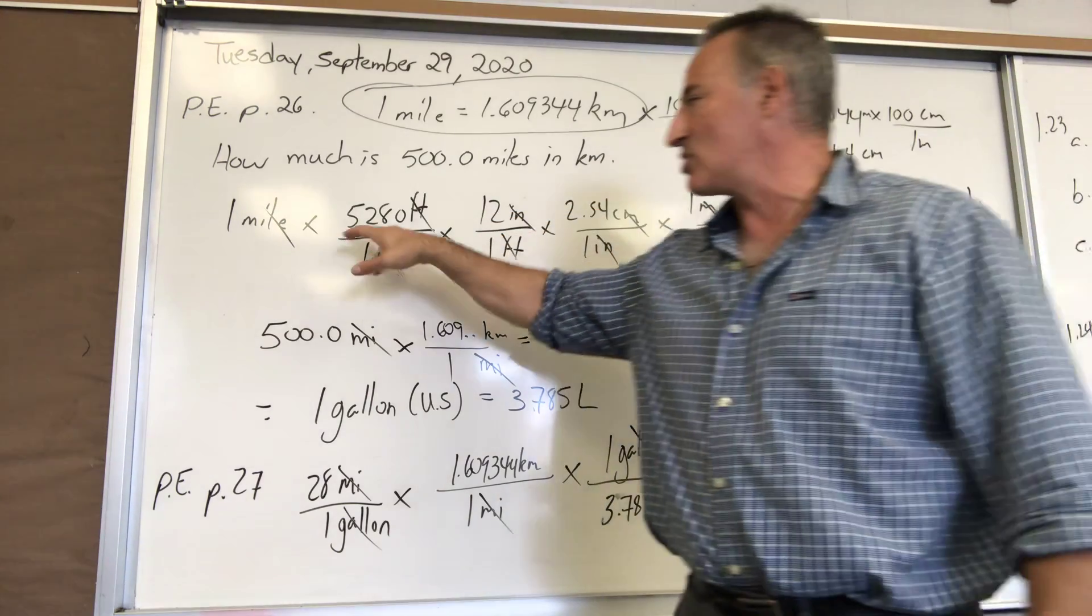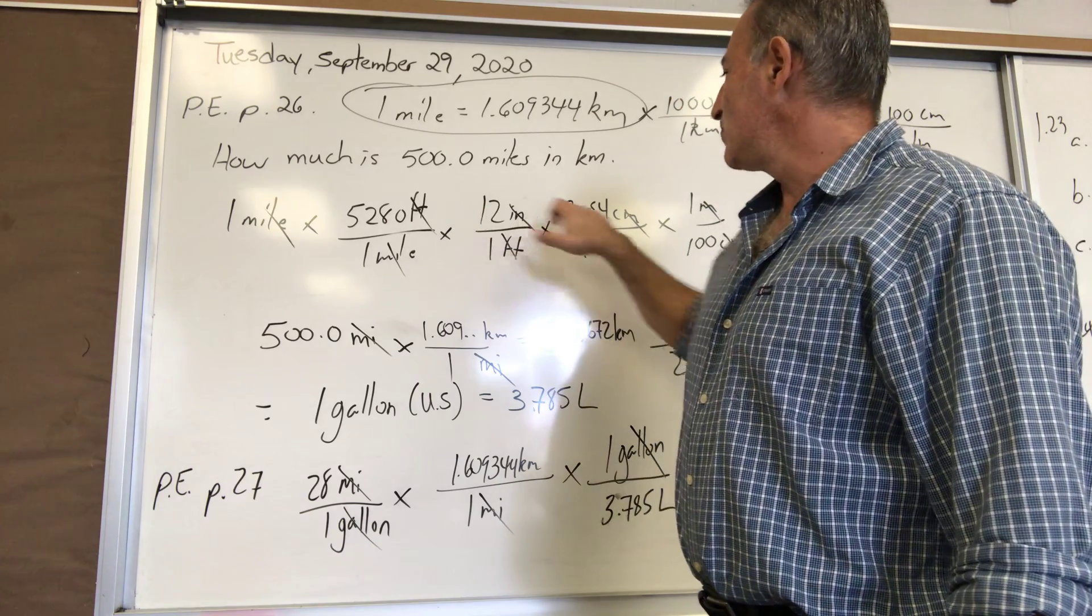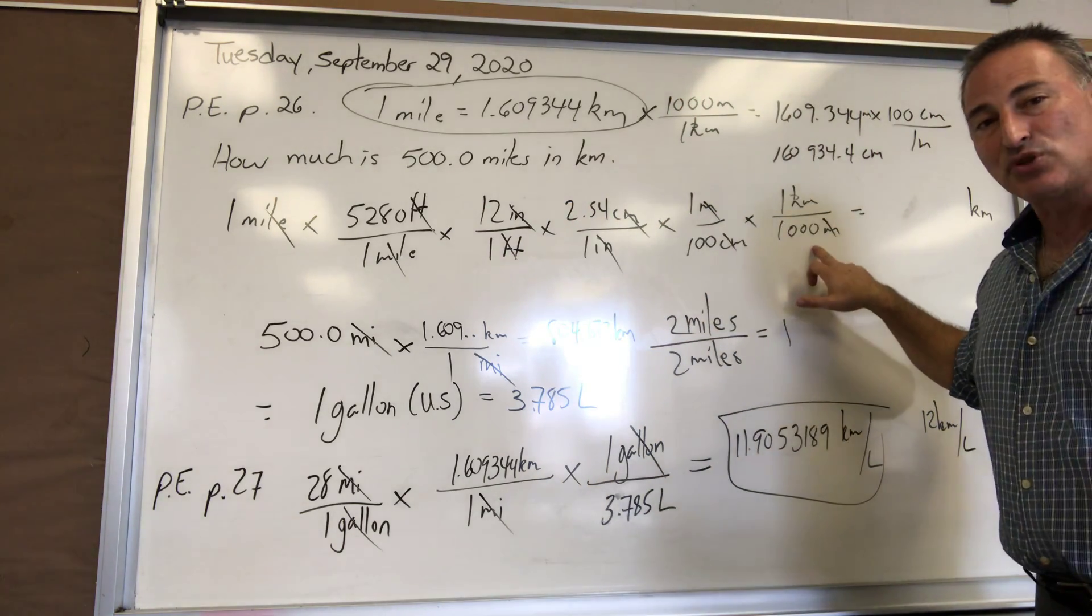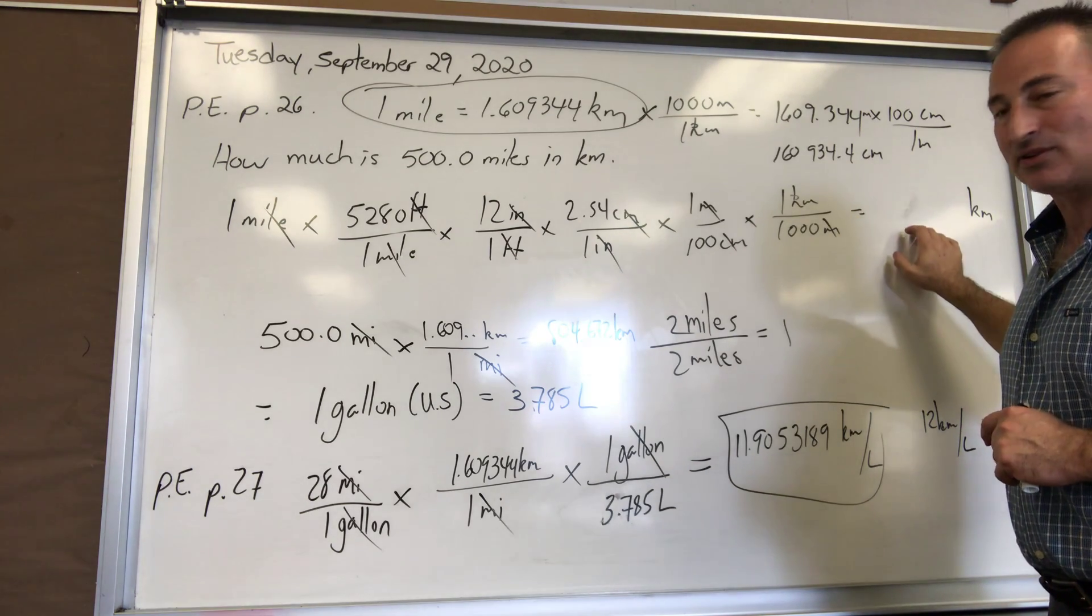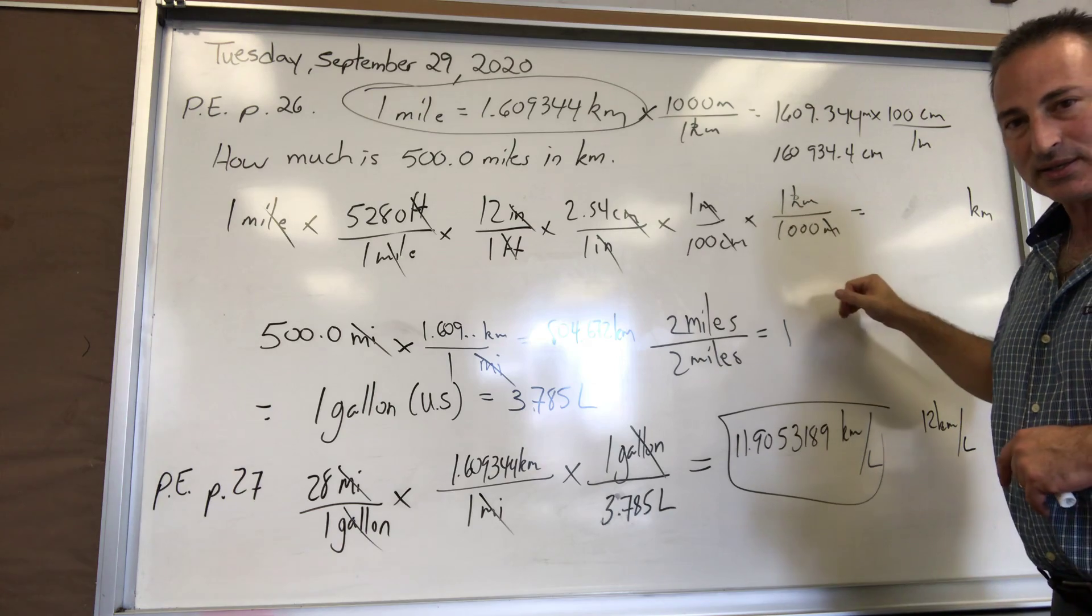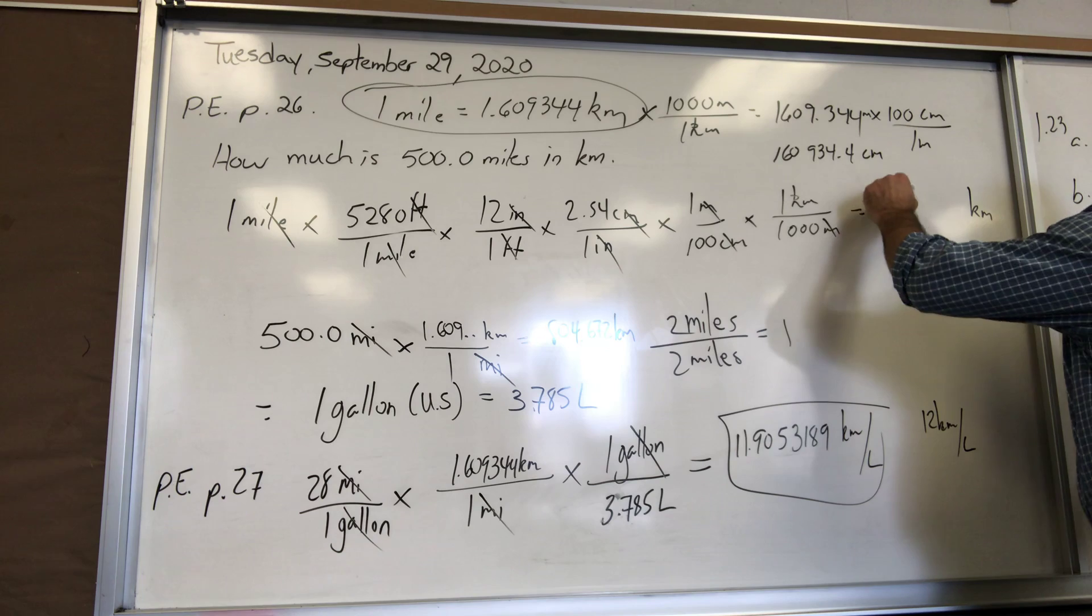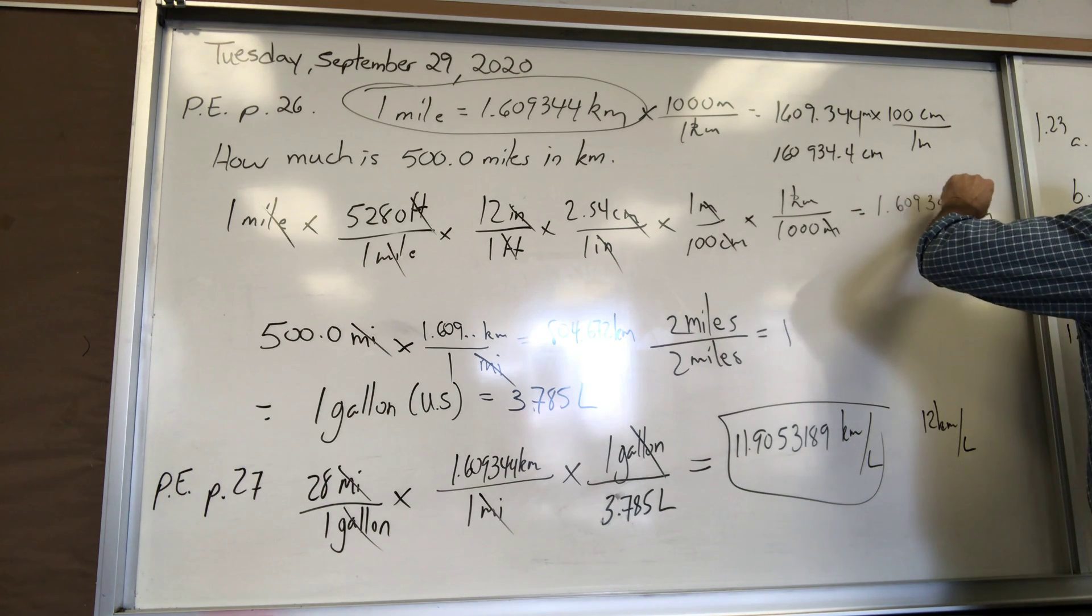At the end when you multiply all the numbers through in your calculator—and this is where students make mistakes because they don't know how to enter the numbers—you start here: 5280 times 12 times 2.54 divided by 100 divided by 1000. That's what you enter into your calculator. Don't bother entering the ones; it's going to slow you down.